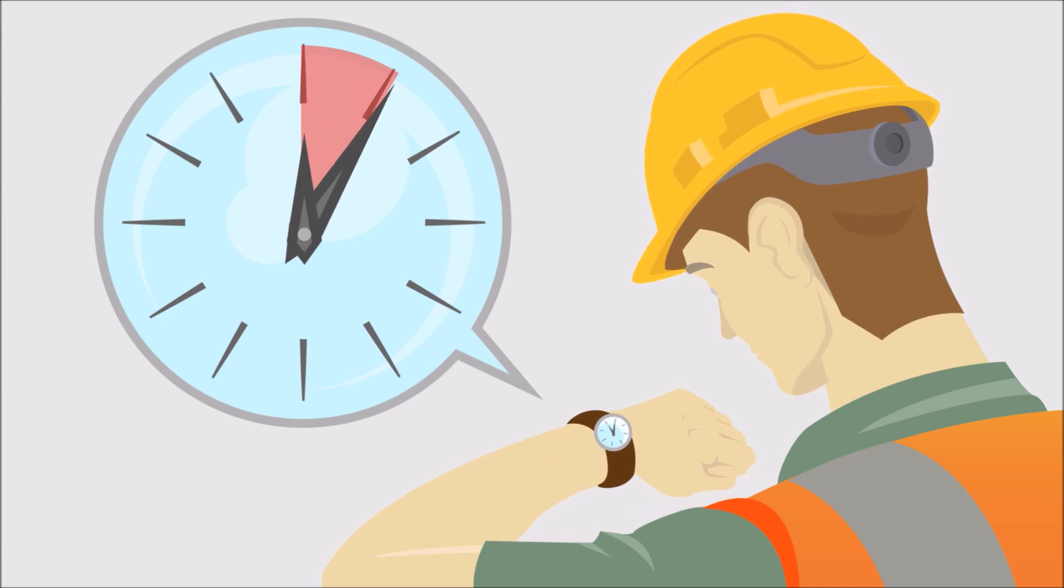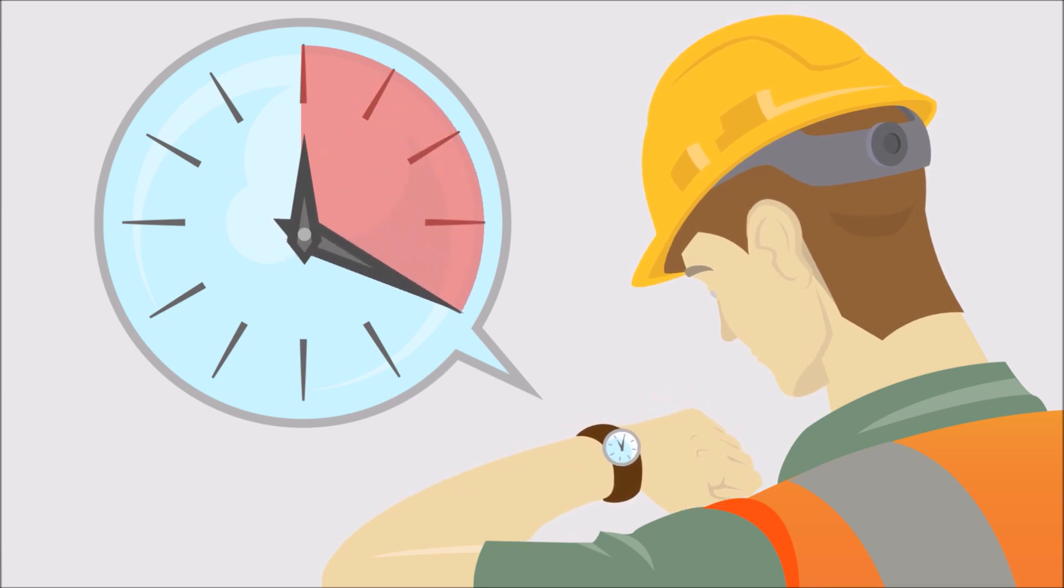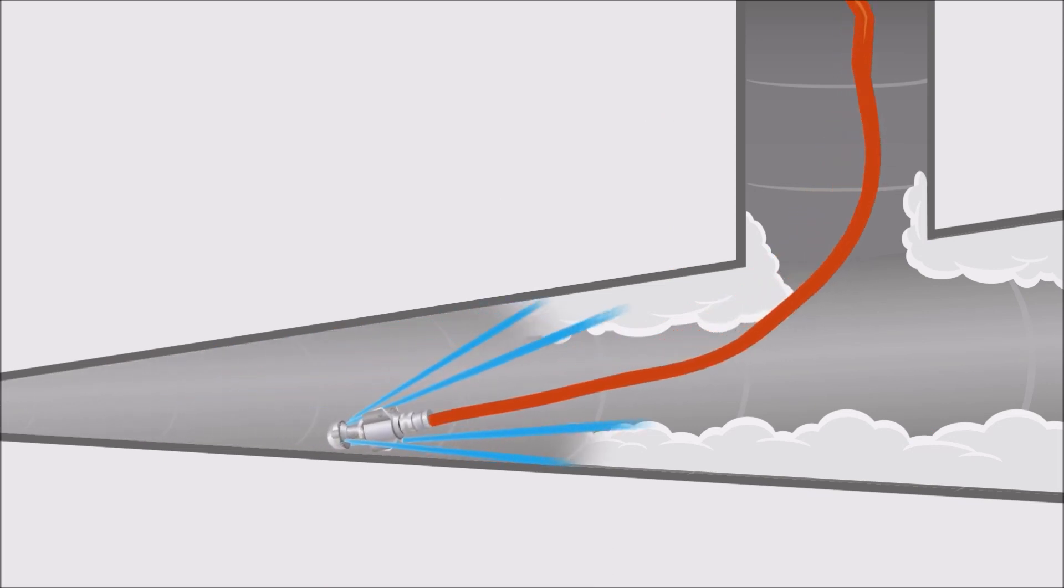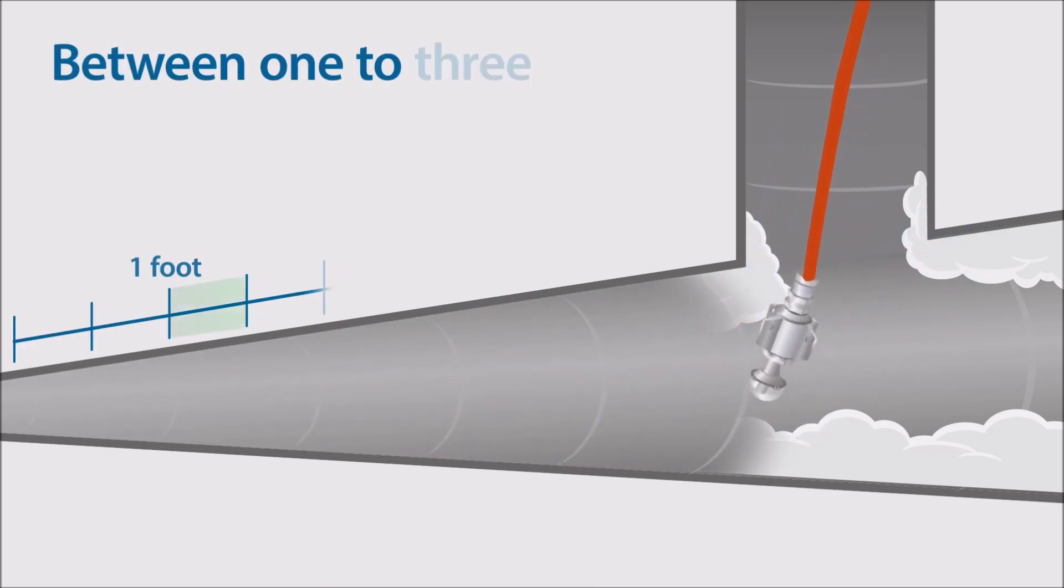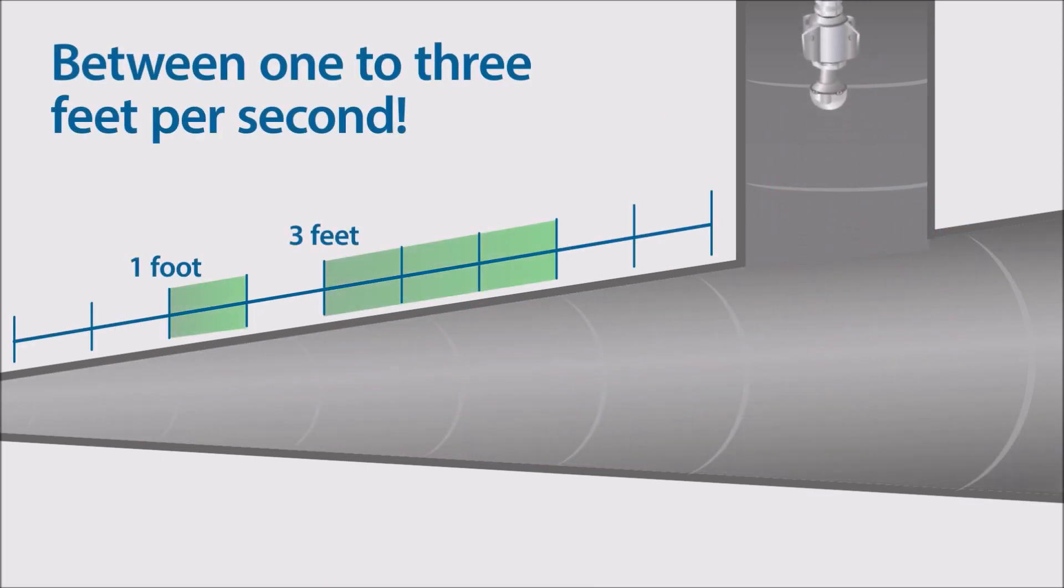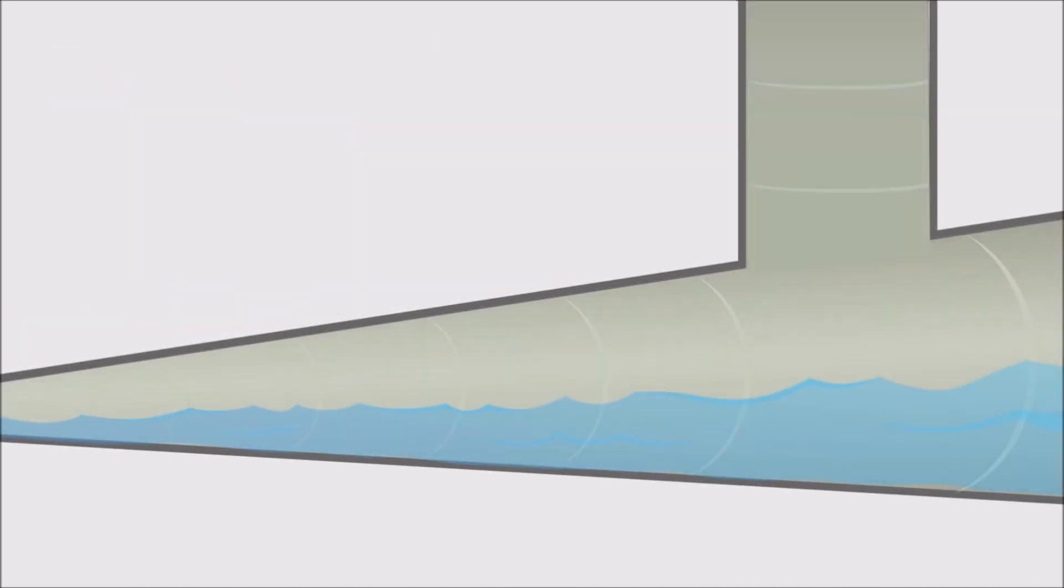Allow Grease-X Jet to penetrate FOG for approximately 10 minutes or longer for heavier buildups. Then just turn the jetter back on high and pull the nozzle back through slowly to clean FOG from the walls and restore pipe flow capacity.